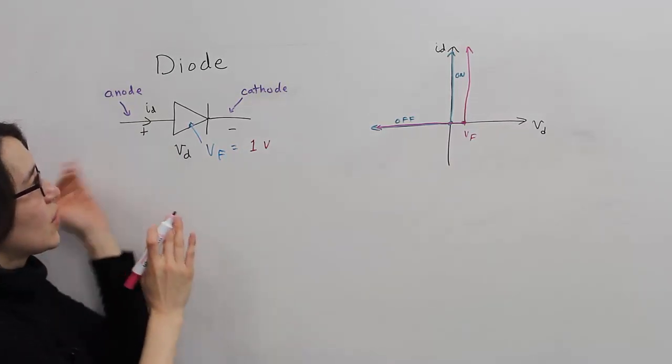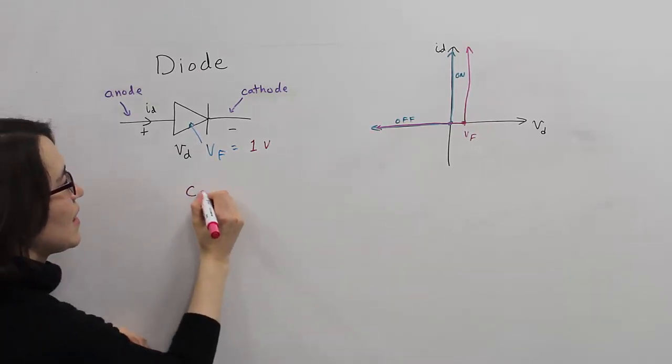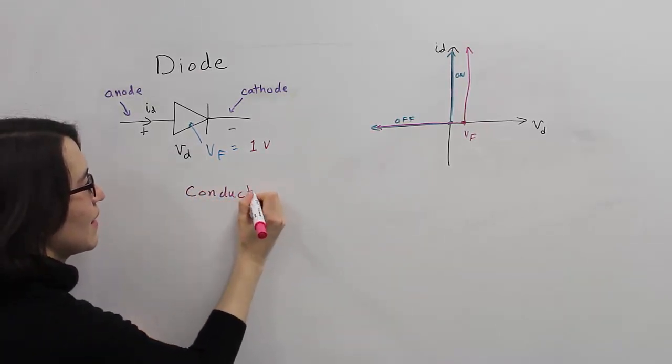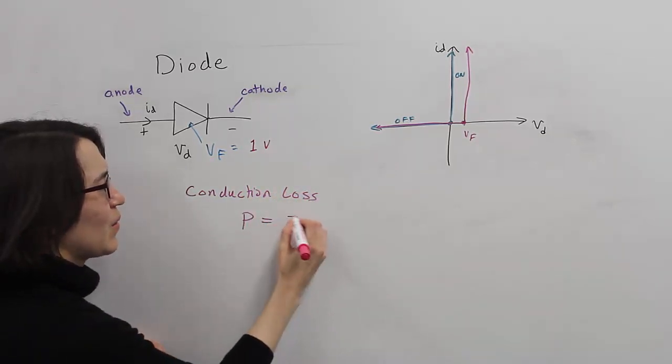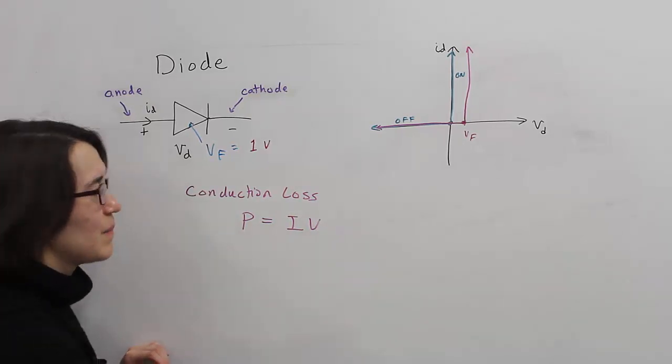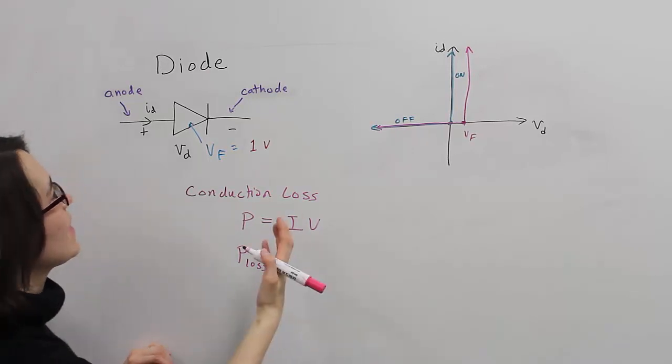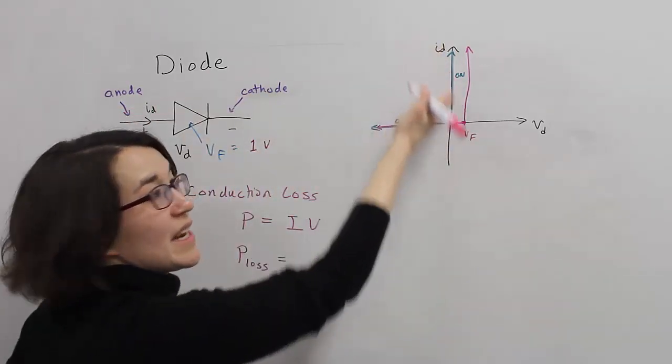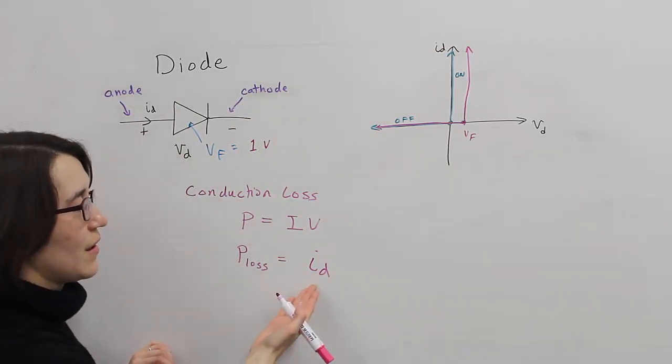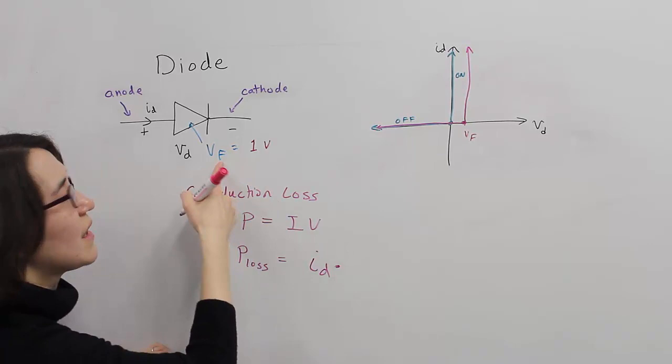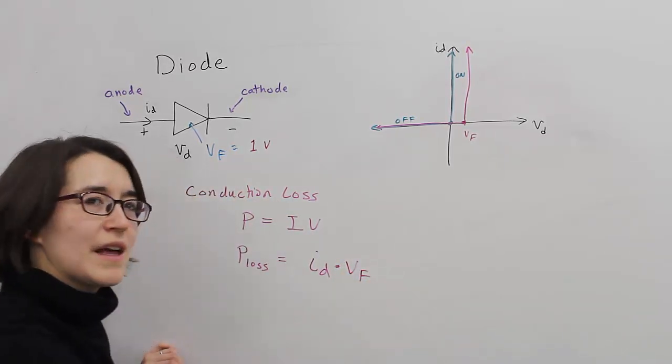When we have current and a little bit of voltage, we're going to have some power loss. So if we want to look at the conduction loss for a diode, we go back to the basic equation. P equals IV, the voltage times the current. So P loss will equal, in this case, whatever the diode current is, and it can be any value. So we'll use this variable ID, whatever the current is to the diode, times the forward voltage. So VF here.